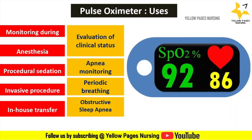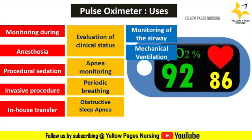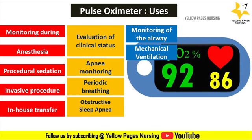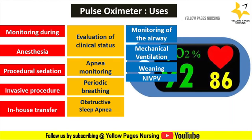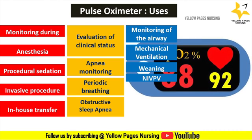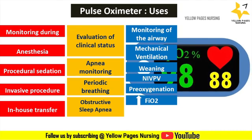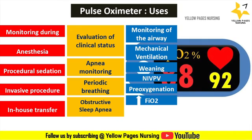Pulse oximeter is used for monitoring the airway during various instances. In the intensive care unit, when the patient is mechanically ventilated, it plays a vital role in monitoring hemodynamic status. It is helpful during weaning from oxygen therapy, during non-invasive positive pressure ventilation, and during pre-oxygenation prior to and during airway procedures such as intubation. It is used for evaluation of the need for increased FiO2 or a definitive airway, and to detect problems with a definitive airway such as a misplaced or obstructed endotracheal tube.